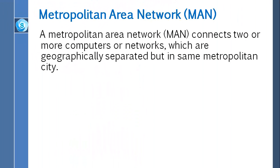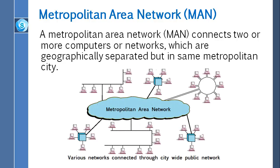Next, we talk about metropolitan area networks. A MAN, or metropolitan area network, connects two or more computers or networks which are geographically separated but in the same metropolitan city. A MAN usually interconnects a number of local area networks using a high-capacity backbone technology such as fiber optic cable, and provides uplink services to wide area networks and the internet. MANs are larger than local area networks but smaller than wide area networks, which we are going to explain next.